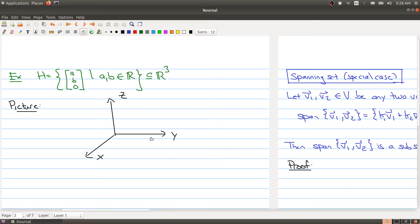So for example, if we take H to be all the elements in R3, so we're looking at vectors with three elements such that the last coordinate is zero, and A and B can be anything, and we'll let that set be H. If we draw that set, it's everything down here in the red area. So this is my H. And the point is that H looks like R2.